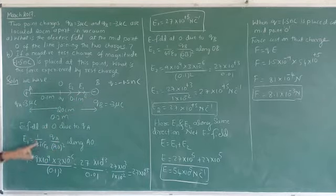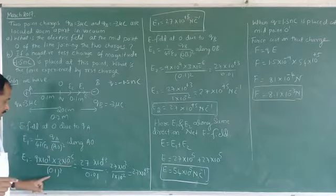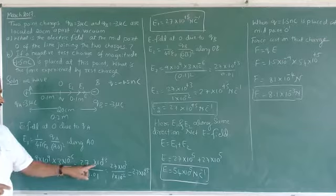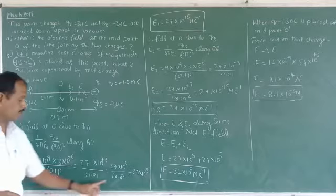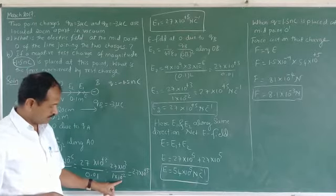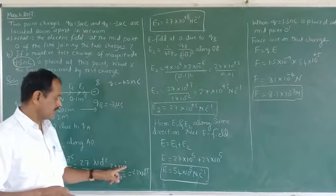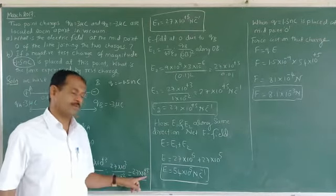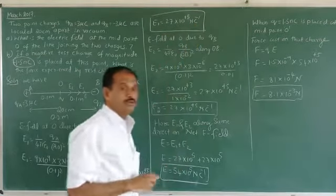Substituting values: E1 = 9×10⁹ × (3×10⁻⁶) / (0.1)². That gives 27×10⁹⁻⁶ divided by 0.01, which is 27×10³ / 10⁻² = 27×10⁵. Therefore, the electric field E1 = 27×10⁵ Newton per coulomb.